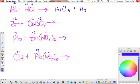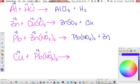Swap these two guys. Swapping a plus 2 for a plus 2 means you don't really have to do anything. Just rewrite it. Zinc sulfate plus copper. Same thing here, swapping a plus 2 for a plus 2. Lead nitrate plus zinc. And last one, we're going to get copper nitrate plus lead.